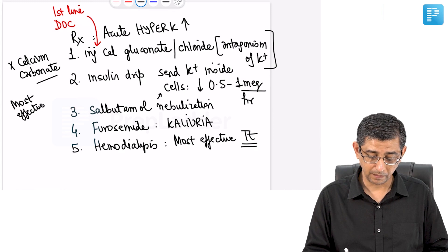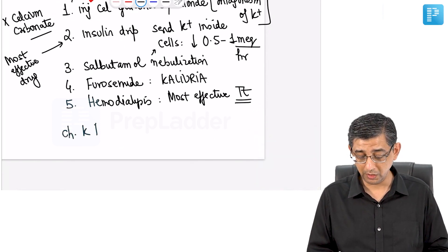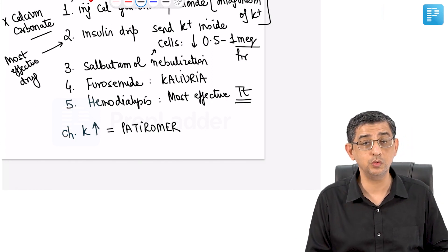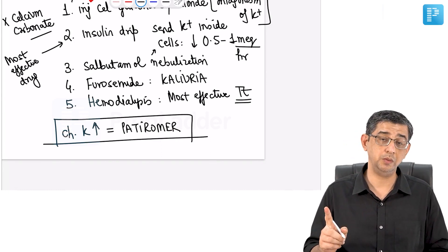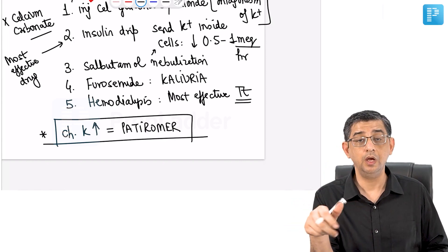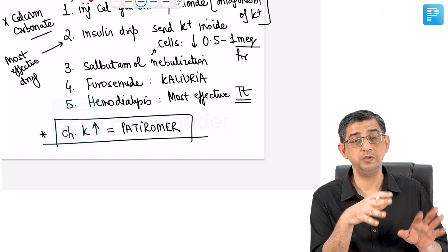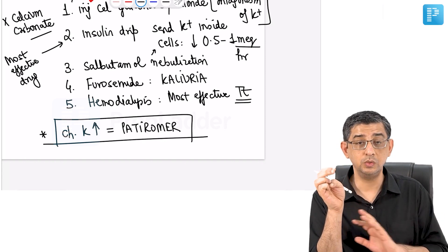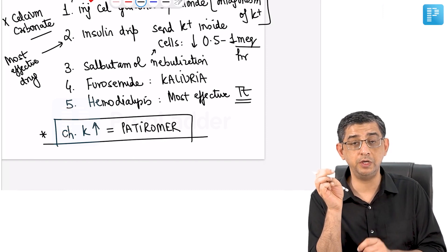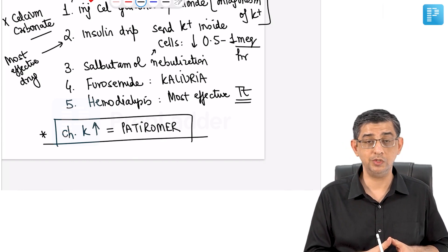If the question specifies a CKD patient with chronic hyperkalemia, the answer is patiromer. Other options include sodium zirconate and sodium polystyrene sulfonate resins. If a patient has chronic hyperkalemia plus hypertension — say potassium of 6 — do not stop the ACE inhibitor. Continue the ACE inhibitor and give patiromer alongside it, because the cardiovascular benefit of ACE inhibitors in CKD patients is too important to lose over hyperkalemia.